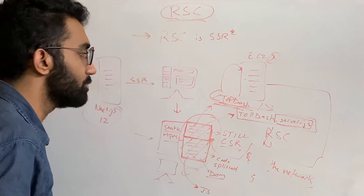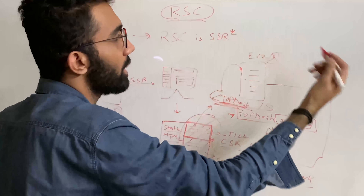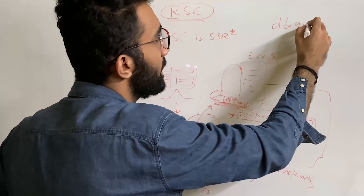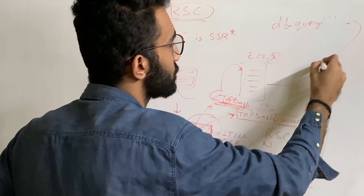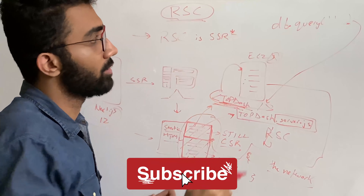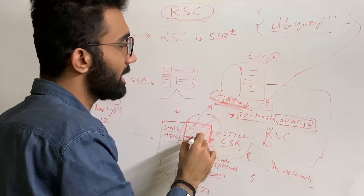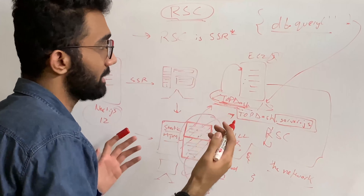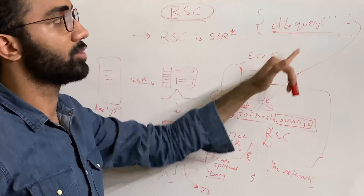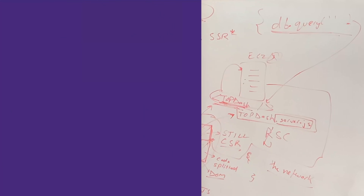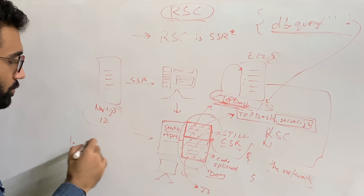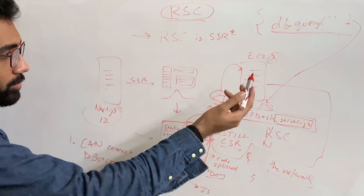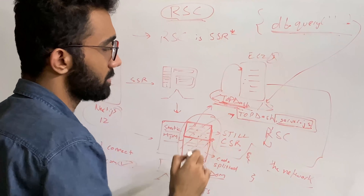What this means is that inside a server component like top-dashboard, you can run a database query directly — because it's running Node on the server and Node can access databases. You can do something like db.query() and dynamically construct the component from the database. That's completely fine because the JavaScript inside that component never gets delivered to the front end. Only the final rendered result is streamed down. That means your credentials, sensitive logic, and any private code you write will never be shipped to the client. You can connect to databases or anything sensitive directly from your component — just give it the .server.js name and it will only render on the server, out of the box.